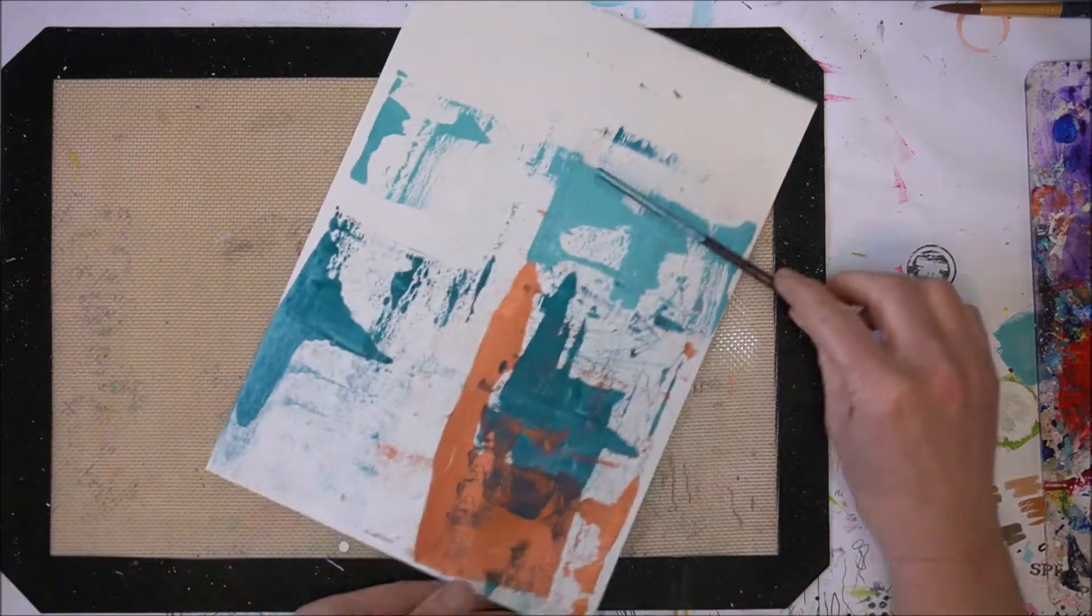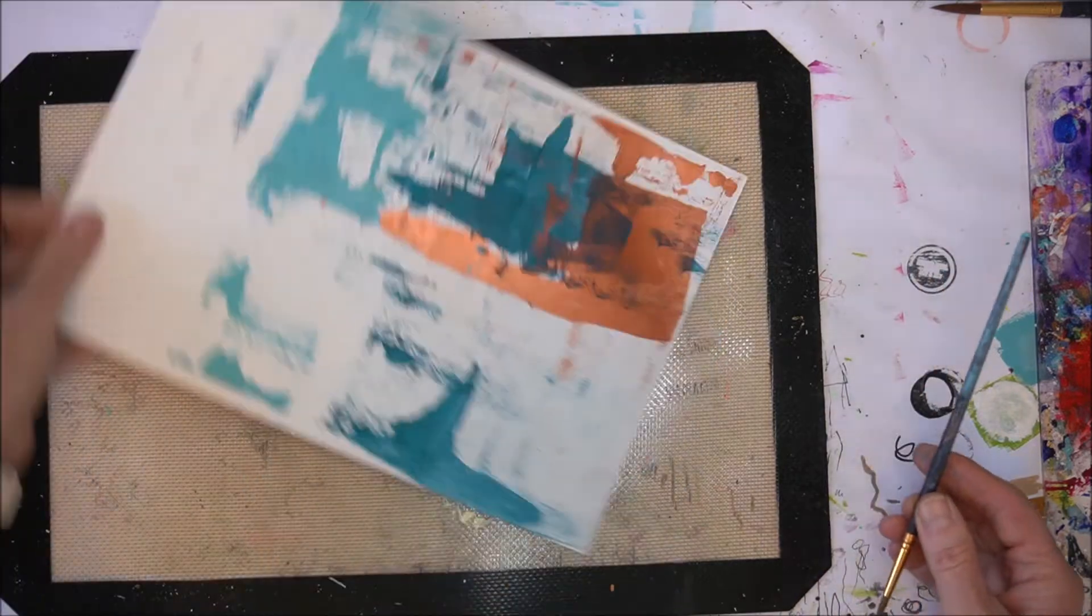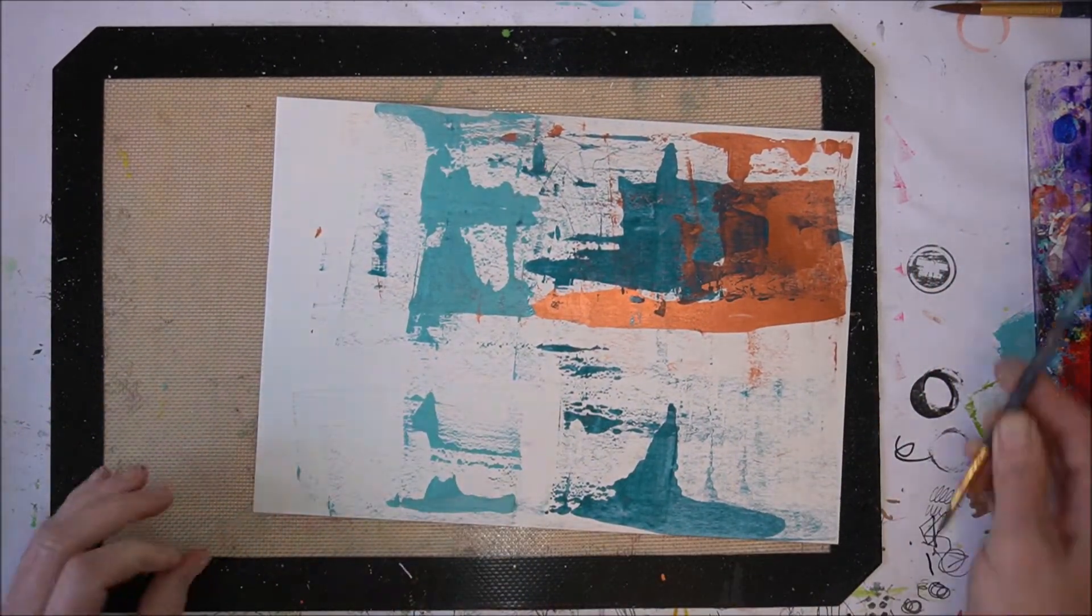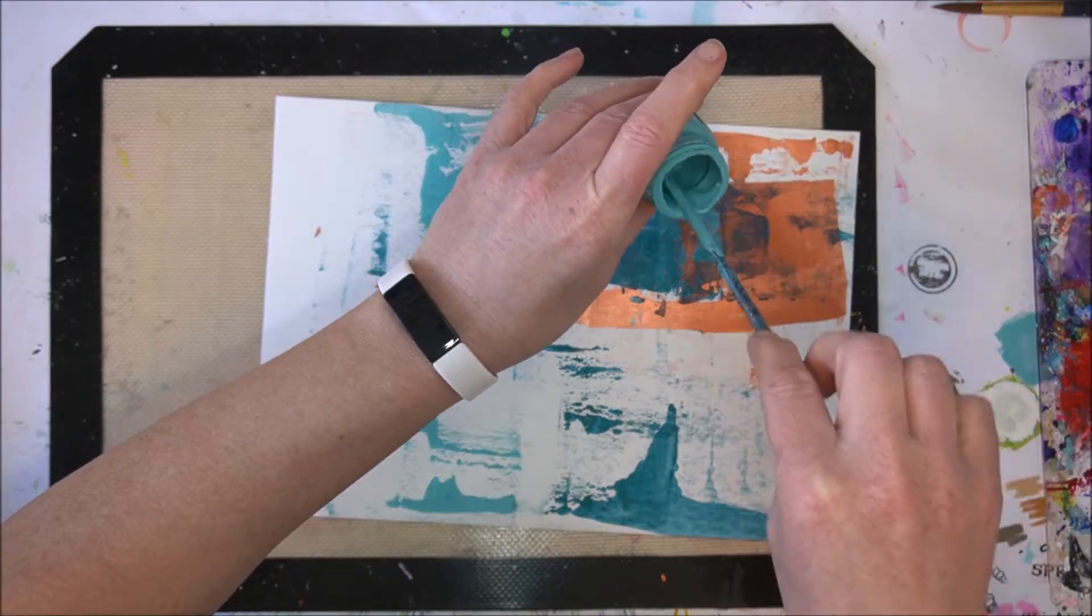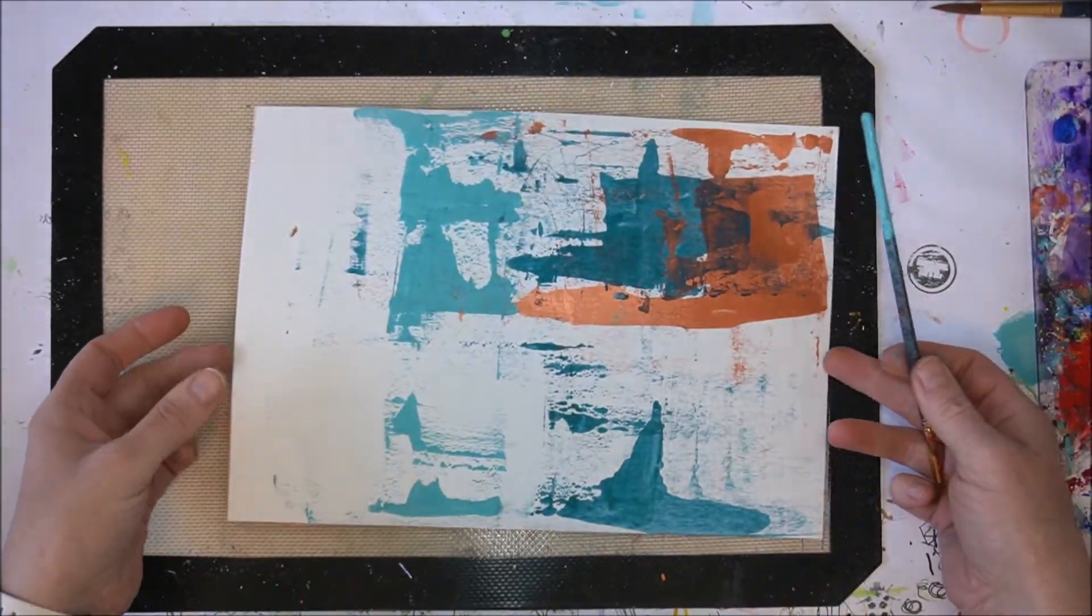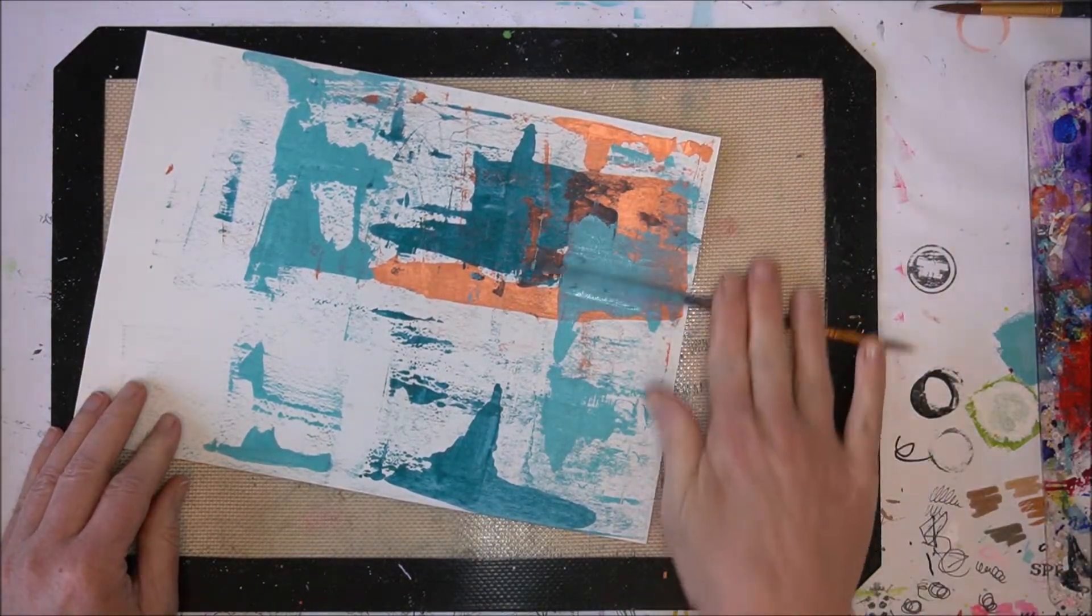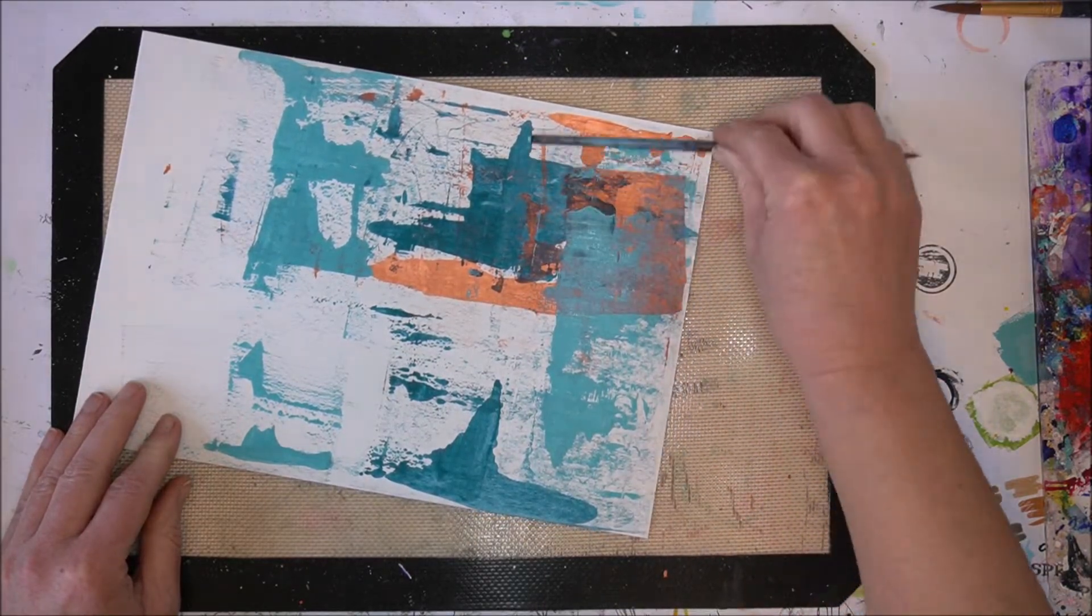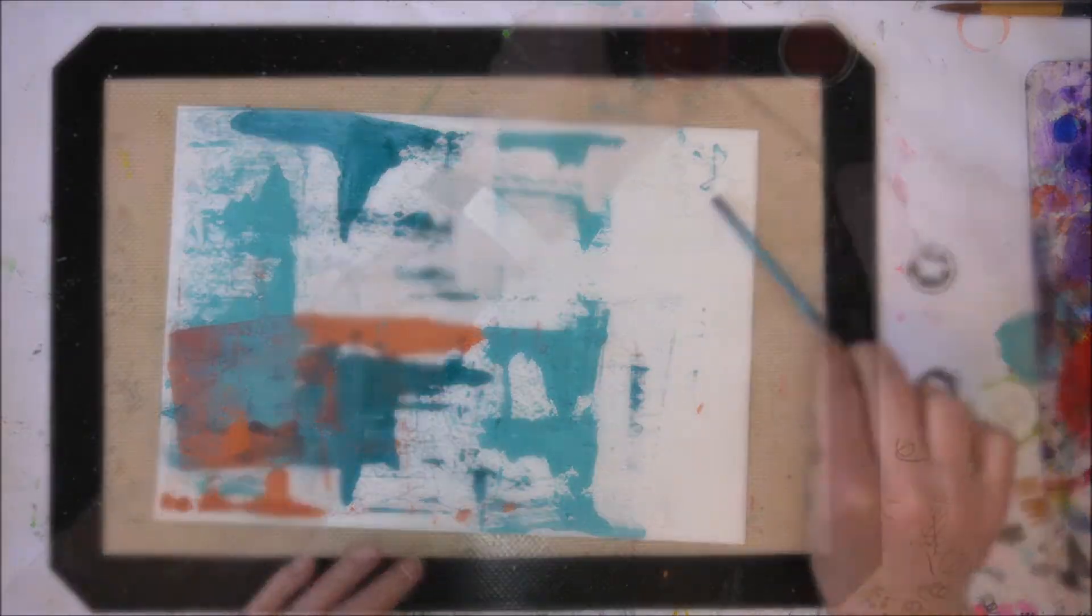I love the grungy, unpredictable way that paint goes onto the paper, so I start to use that reverse paintbrush technique and more or less cover the paper with the color.